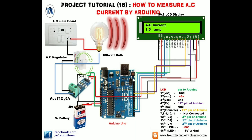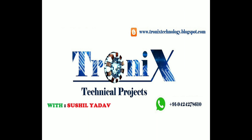Project tutorial 16: how to measure AC current by Arduino. In this project I will teach you how to measure AC current using an Arduino setup. In my previous video, project tutorial 15, I showed you how to measure DC current using a simple multimeter. You can also measure AC current by multimeter, but not a simple one — you need some advanced or costlier multimeters. If you want to make a simple and cheap setup to measure AC current, you can use this circuit and construct your own measuring circuit using Arduino code.